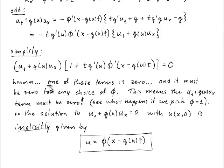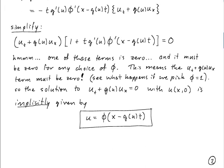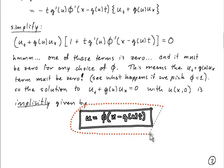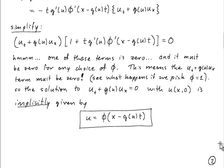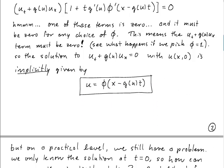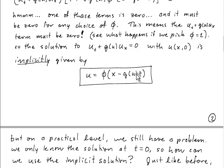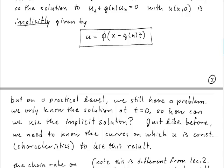So basically we have confirmed that the trial solution that we guessed, this guy, is indeed a solution of the problem. So the problem is that this is not a very practical solution. Right? So this is an implicit definition of the function u of x and t in terms of some other function phi whose argument includes u. Okay? So it's not a very practical solution in that sense.